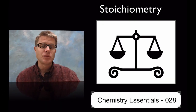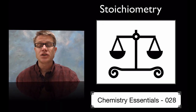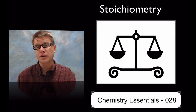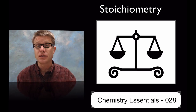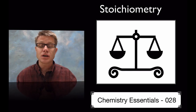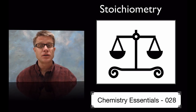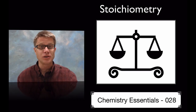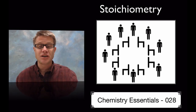Hi. It's Mr. Andersen and this is Chemistry Essentials video 28. It's on stoichiometry, which is really just measuring atoms. In other words, in a reaction we're measuring the atoms we have before the reaction and after. And because of the conservation of mass we have to make sure those are the same. It's a really powerful tool. Chemistry teachers love stoichiometry, and students not so much.